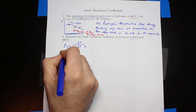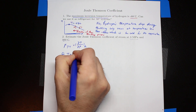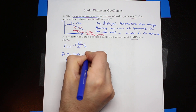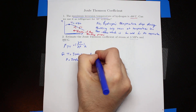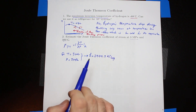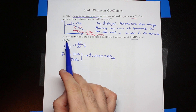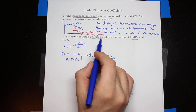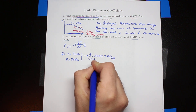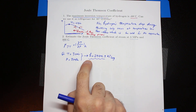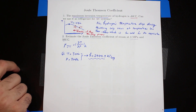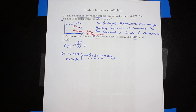We want to find the enthalpy of steam at the given conditions — temperature equal to 300 degrees C and pressure equal to 3 megapascal. From the steam tables, the enthalpy is equal to 2994.3 kilojoules per kilogram. This is our reference enthalpy. Since throttling is a constant enthalpy process, this value is maintained throughout.